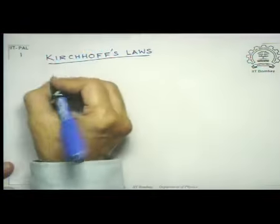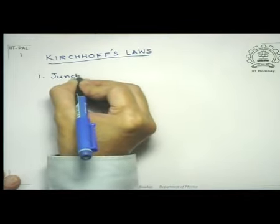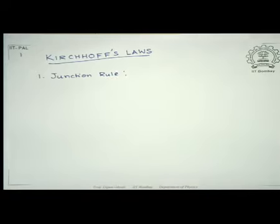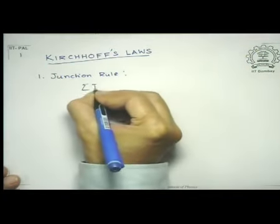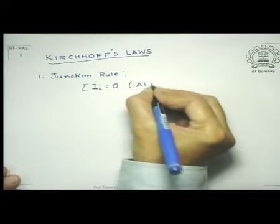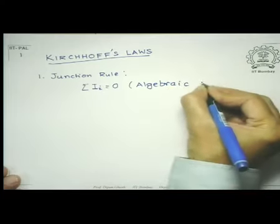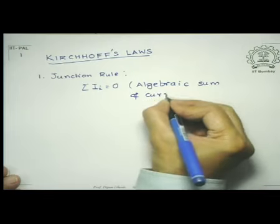There are basically two laws. The first is to define what is meant by a junction. A junction is a point where three or more conductors meet. There is a rule regarding this — the first law is called the junction rule. The junction rule simply says that if you assign a sign to the current coming in — say, current coming in is positive and current leaving is negative — then the algebraic sum of currents at a junction, sum over I equals zero.